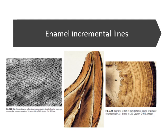Moving on to enamel: there are two types of incremental lines in enamel, as well as in dentine. The first are short period lines, known as cross striations. They are called short period lines because they are deposited at intervals of 3 to 6 microns, demonstrating that enamel is deposited on a daily basis — representing a circadian rhythm. From 5 to 10 cross striations together form a weekly incremental pattern.